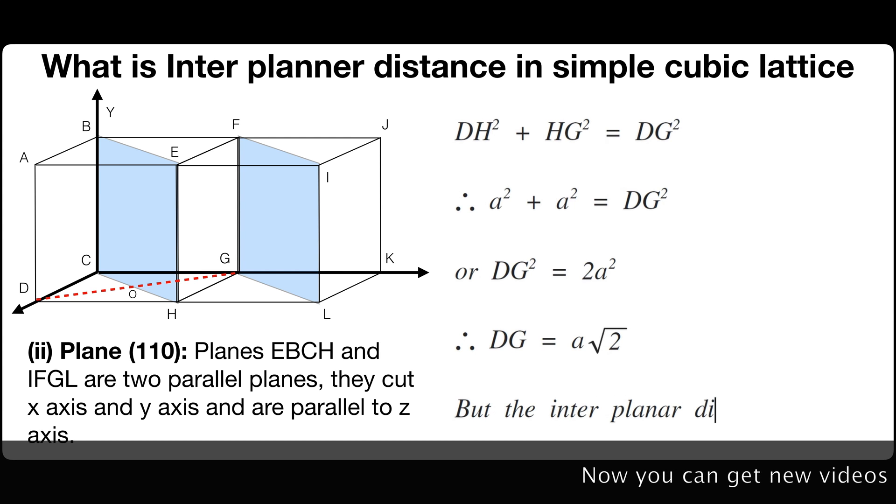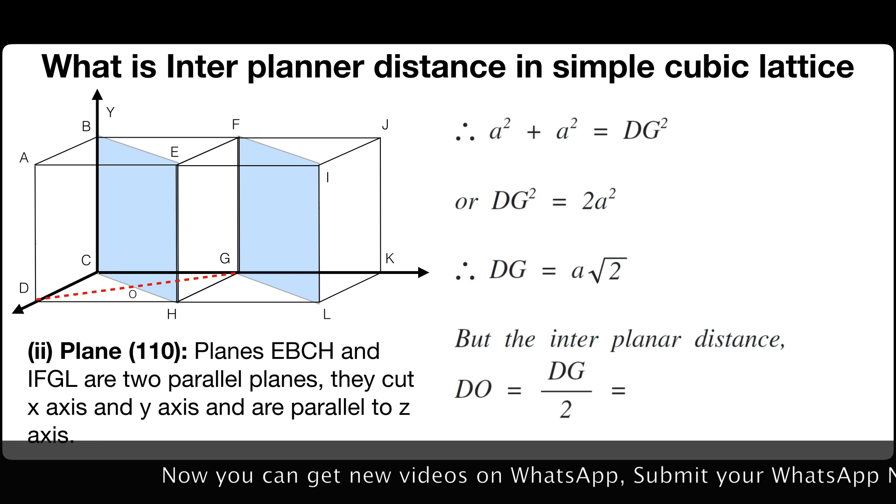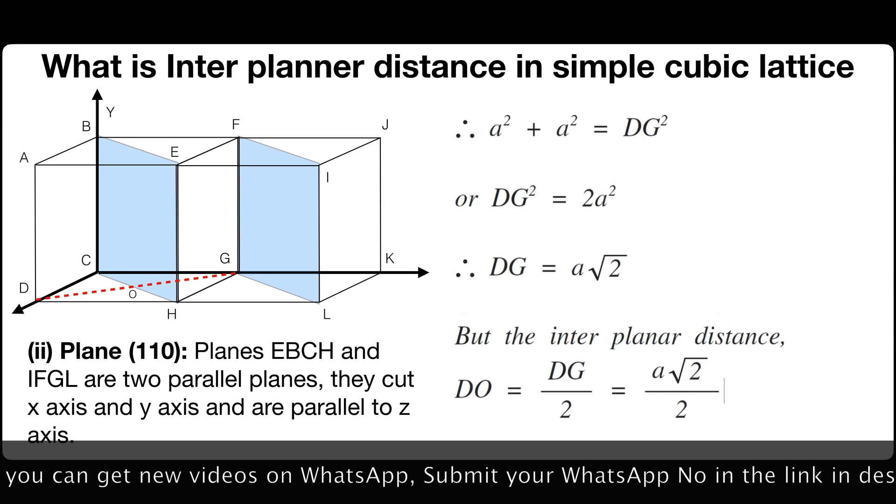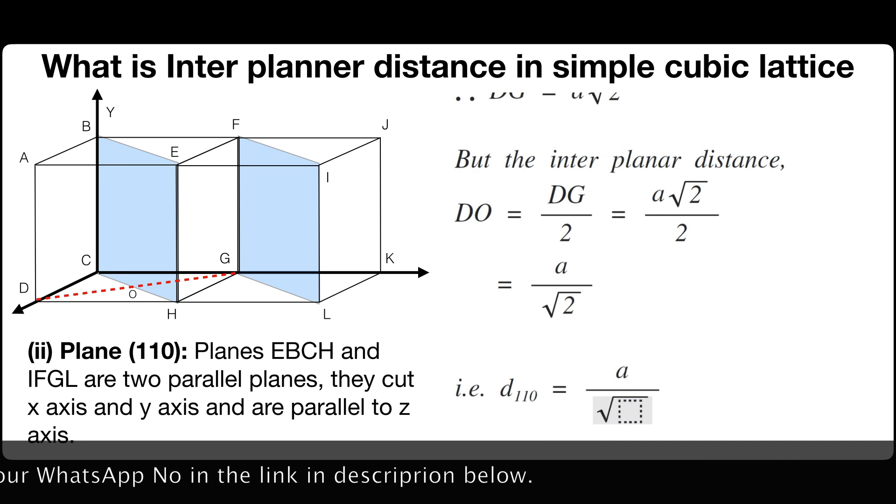But the interplanar distance OD is equals to DG by 2 which is equals to A square root of 2 divided by 2 or A by square root of 2. That is D110 is equals to A by root of 2.